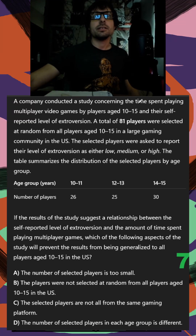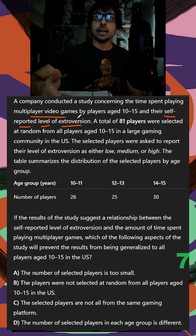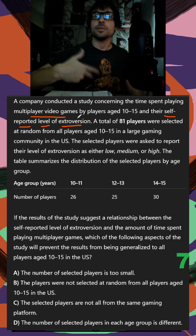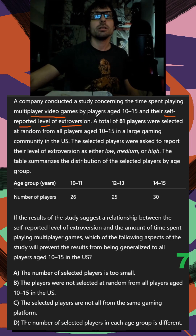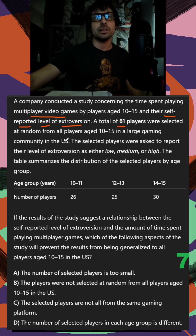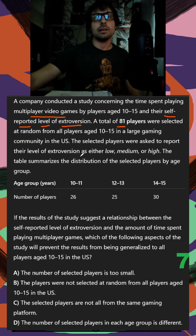A company conducted a study concerning the time spent playing multiplayer video games by players aged 10 to 15 and their self-reported level of extroversion. There could be a connection because in multiplayer games you have to communicate with others, so maybe there are higher levels of extroversion. A total of 81 players were selected at random from players aged 10 to 15 in a large gaming community in the US. The players were asked to report their level of extroversion as low, medium, or high.